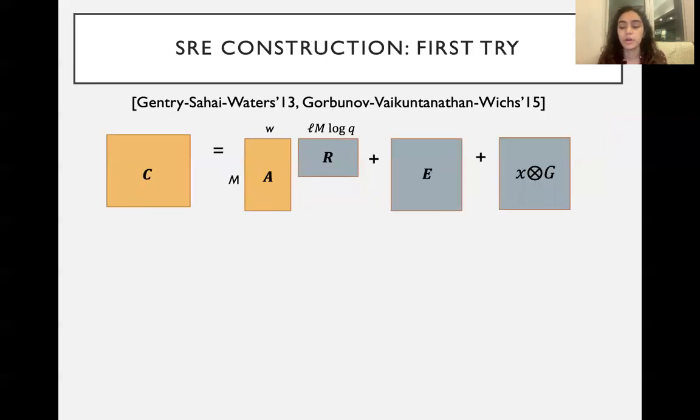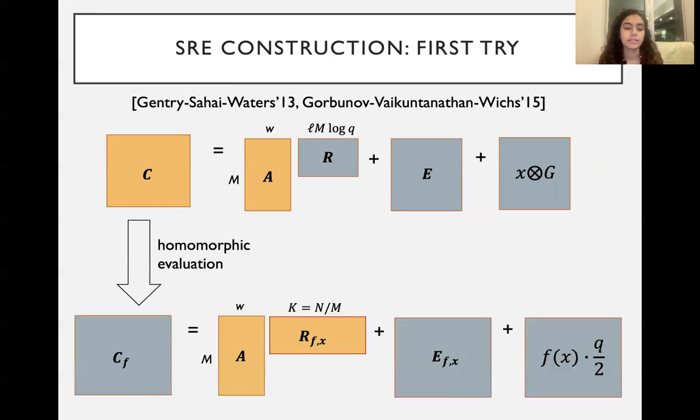Okay, here's our first try based on some homomorphic commitment schemes, GSW and GVW, if you're familiar. So we'll have some commitment C. This commitment C will consist of a matrix A, a tall skinny matrix A. Here we have that W will be much, much smaller than M. We're going to multiply by some randomness R, add an error E, and then finally our encoding of the input will be x tensor G, where G is the gadget matrix. We can perform homomorphic evaluation on this commitment to get C_f. Note that this homomorphic evaluation only requires knowledge of the function f and not of the input x. However, the two matrices that we see here, R_f(x) and e_f(x), they do depend on x. And after doing this homomorphic evaluation, we can recover f of x by simply subtracting A times R_f(x) and then rounding because e_f(x) will still be small.